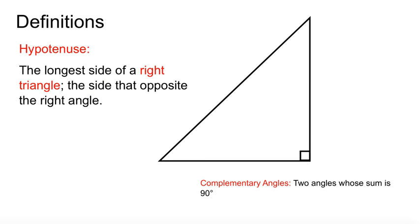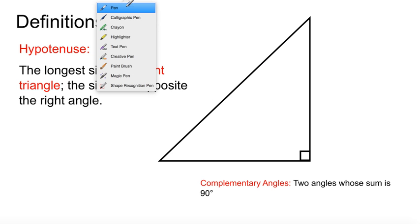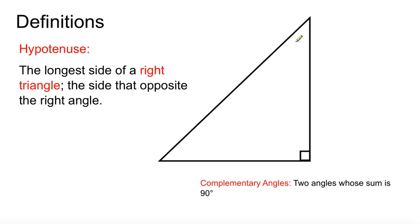But first, we need to find out what a definition is here. The definition is hypotenuse. What's a hypotenuse? It is the longest side of a right triangle, and it's the side that's opposite the right angle. So here's a hypotenuse, the longest side of the three in a right angle triangle. Only a right angle triangle has a hypotenuse. So it is opposite that of the right angle.